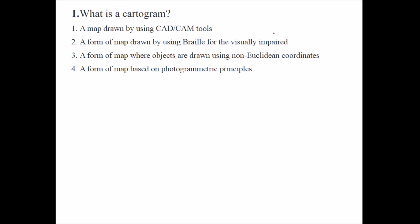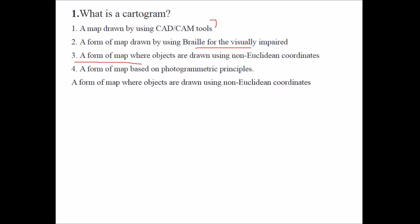Now these are a few multiple choice questions. What is a Cartogram? Options: a map drawn by using CAD/CAM tools; a form of map drawn using Braille for the visually impaired; a form of map where objects are drawn using non-Euclidean coordinates; or a form of map based on photogrammetric principles. The answer is: a form of map where objects are drawn using non-Euclidean coordinates.